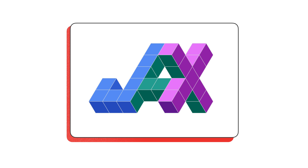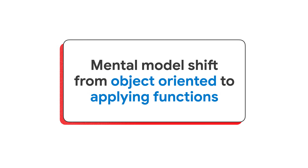JAX is a Python library that's great for high performance machine learning. But if you're used to traditional programming, mastering JAX requires a significant shift in your mental models, moving towards a functional world. This means instead of thinking of things as objects we act on, instead we apply functions. And in the case of machine learning, that's typically done to our data.